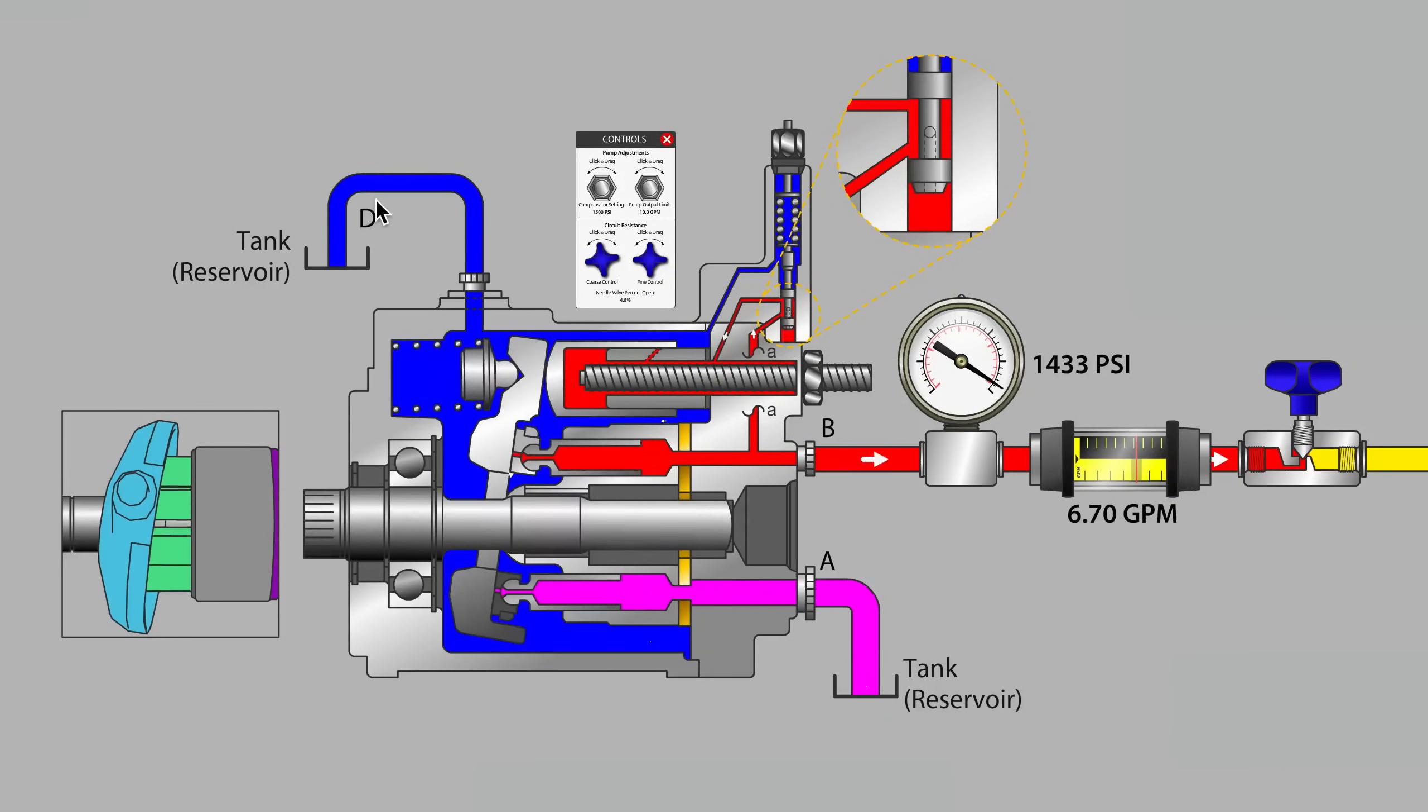As you can imagine, partial blockage on the case drain line will restrict the flow of case drain fluid leaving the pump and complete blockage of the line of course would cause all of the lubricating flows that are occurring inside the pump to stop.